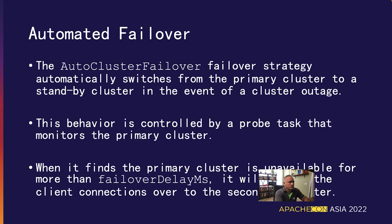Let's discuss the automatic failover client first. This failover client automatically switches clients over to a designated standby cluster if and when it detects an outage on the primary cluster. This is accomplished by a probe task that periodically interrogates the primary cluster to determine if it's running. Once it detects the primary cluster is unavailable, it starts a timer to measure the length of the outage. This ensures we don't inadvertently switch over due to a transient network issue. We want to avoid switching rapidly back and forth between clusters, as that is not good for data consistency. If the outage continues longer than a user-configured duration, then the switchover occurs.